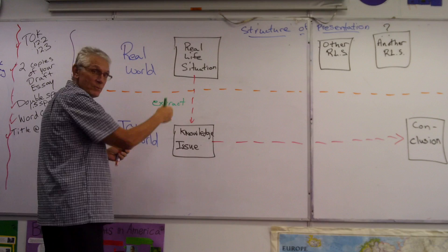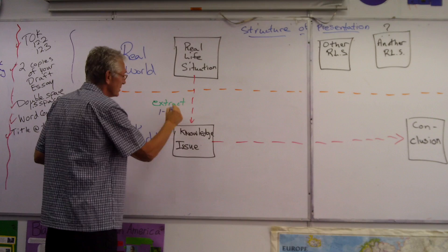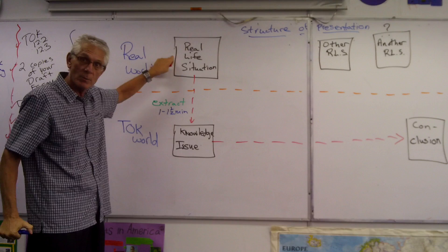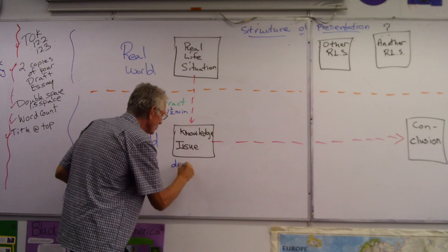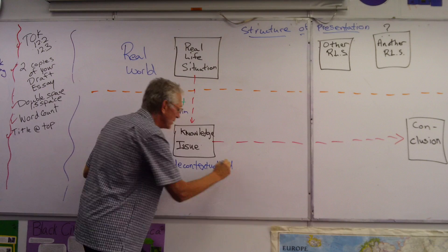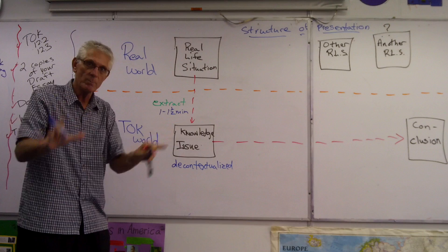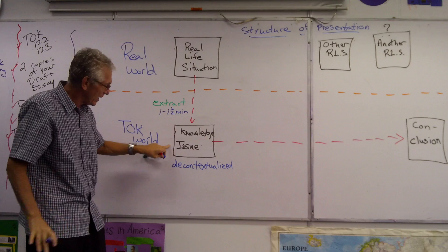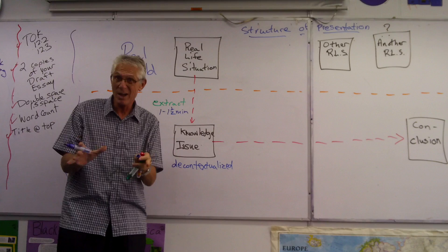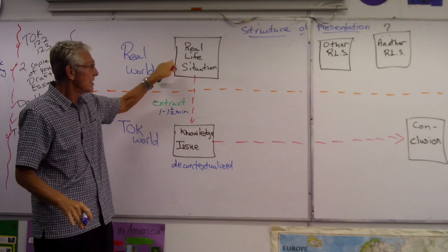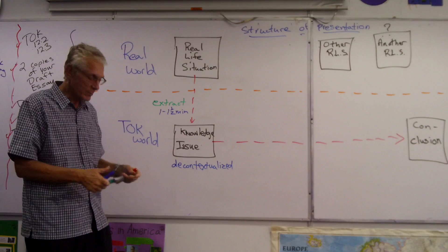You've got 20 minutes for the whole presentation. To do what I've just done — extract your KI — you should figure on one to one and a half minutes. Your KI should start with a specific real situation and then become decontextualized, meaning it isn't just applying to this situation but can be applied to a number of situations. So I started with a survey in Singapore and taken it to: how reliable is evidence in the human sciences? It becomes applicable to all human sciences — decontextualized.